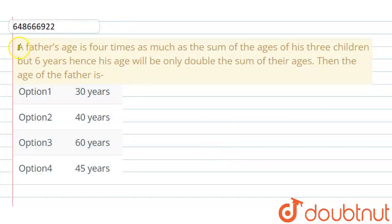Welcome to Doubtnut. Our question is: A father's age is four times as much as the sum of the ages of his three children. But six years hence, his age will be only double the sum of their ages. Then the age of the father is?